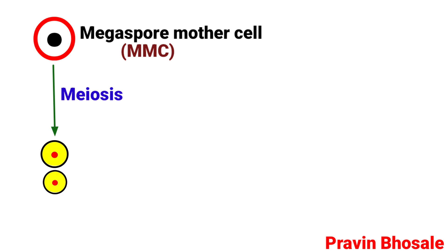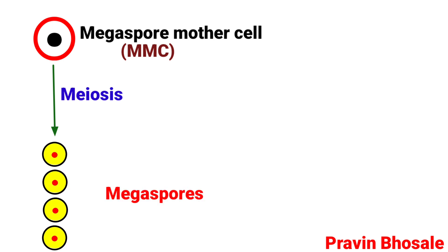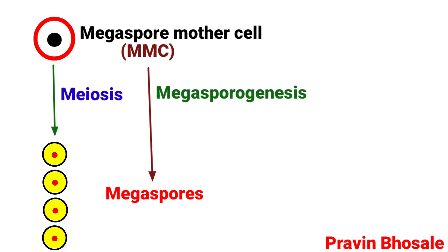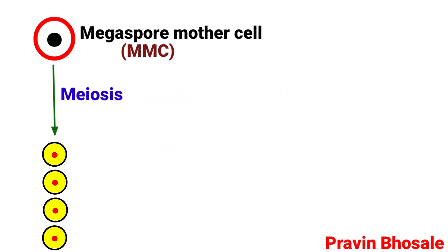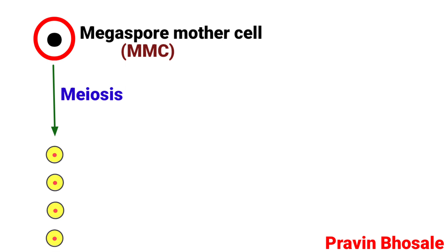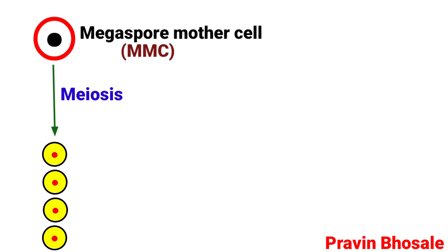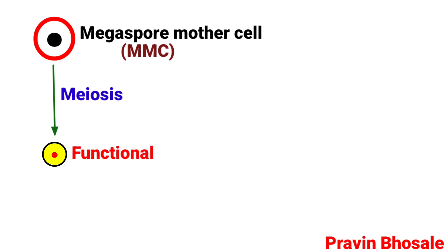The megaspore mother cell undergoes meiosis and produces four haploid megaspores. This process is called megasporogenesis. These four megaspores are arranged one below another in a linear tetrad. Out of the four megaspores, the one present at the chalazal end becomes functional and the other three degenerate.